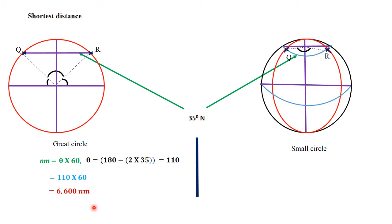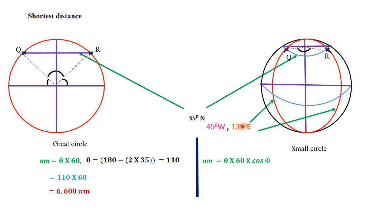For the small circle route along the latitude, the formula is θ times 60 times cos φ. The angle difference θ is 180, because moving from 135 degrees east to 45 degrees west covers 135 plus 45 equals 180 degrees. The latitude φ is 35 degrees north. Substituting the values: 180 times 60 times cos 35 equals 8846.84 nautical miles.